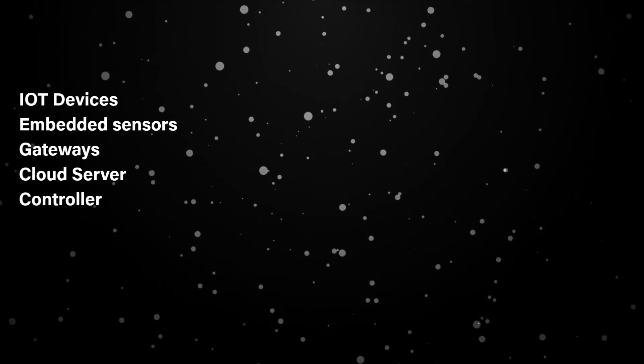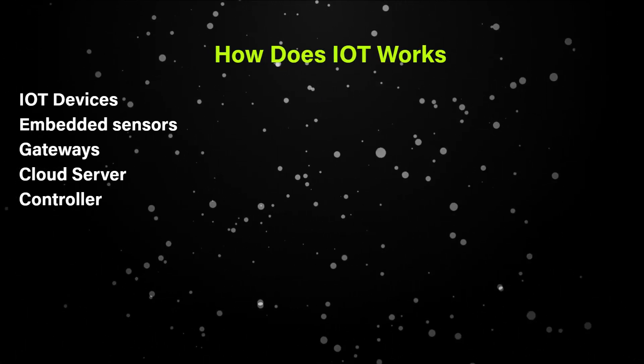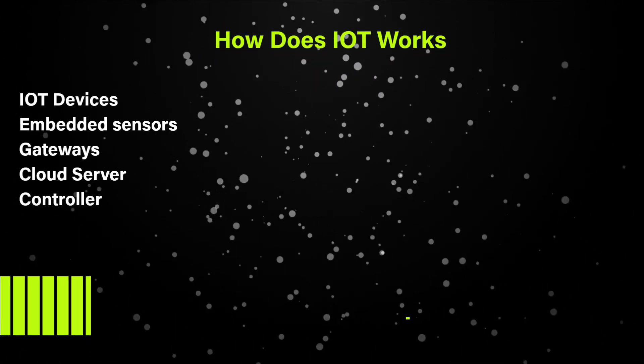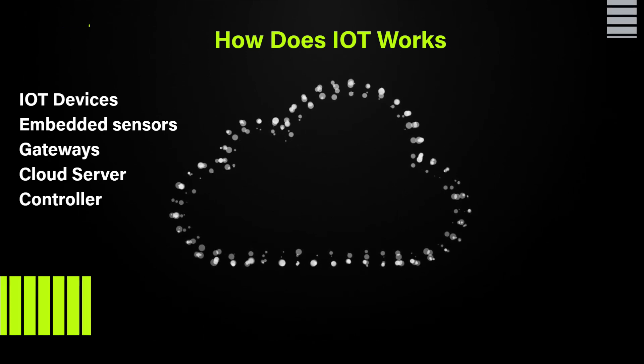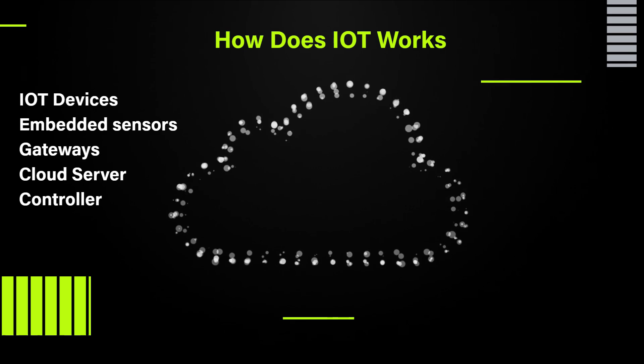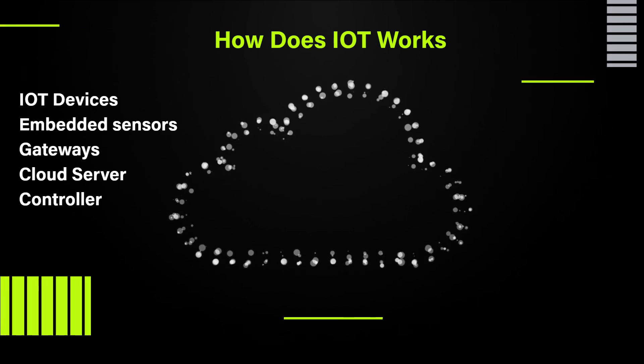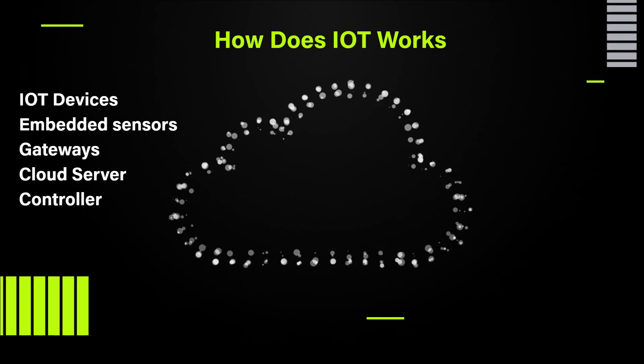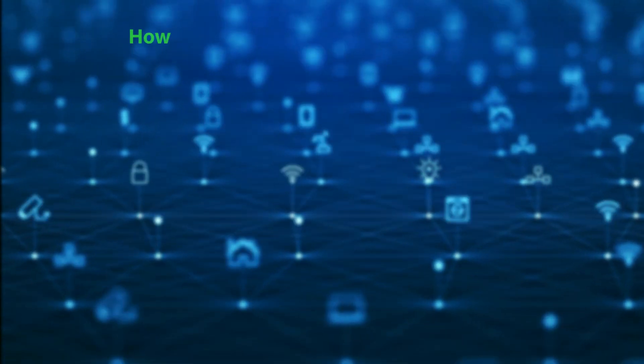For smooth functioning of IoT, let's see how IoT works. For functioning of IoT, we have IoT devices, embedded sensors, gateways, cloud server, and lastly, controllers. IoT sensors play a critical role in the functioning of IoT. Here, let's take an example to understand how IoT works.